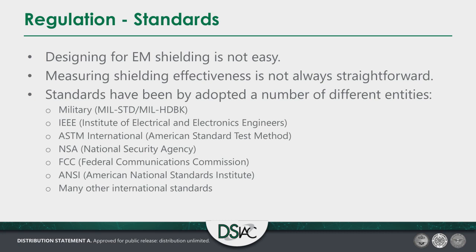Designing for EM shielding is not easy, and measuring shielding effectiveness is not always straightforward — it's done in a lab with very specialized equipment, and what works in the lab doesn't always work perfectly in the field. Standards have been adopted by a number of entities: the military, IEEE, ASTM, the National Security Agency, the FCC, the American National Standards Institute, and many international standards. International standards matter because they involve the operation of American military assets in other countries — we have to know how to work within them in countries we don't govern but still find ourselves operating in.